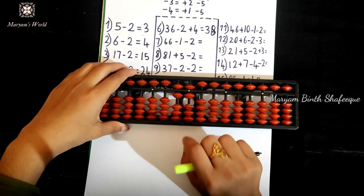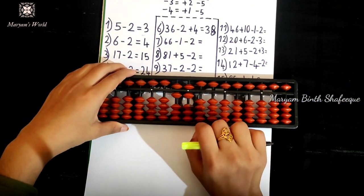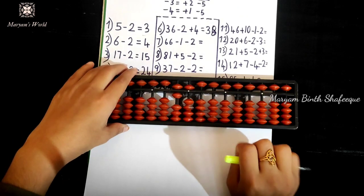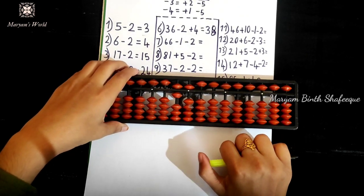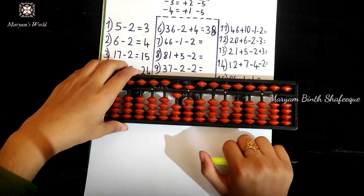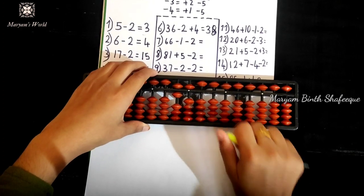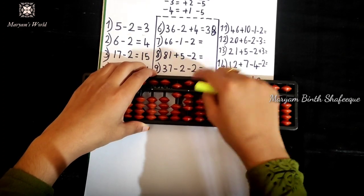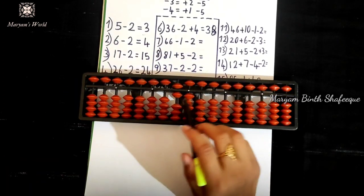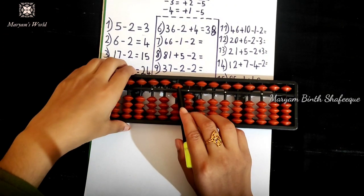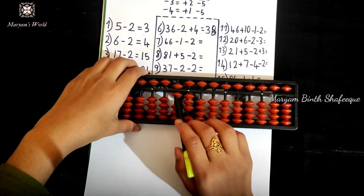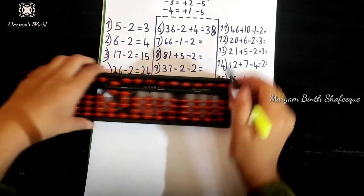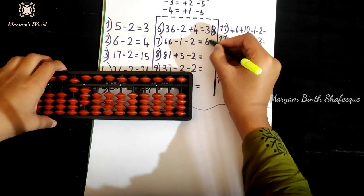66 minus 1. We write the formula: minus 1 minus 2 minus 2 minus 2 minus 2. Minus 2, applying the formula: minus 2 because plus 3 minus 5. Sorry. Count: 50, 60, 61, 62, 63. Result: 63.